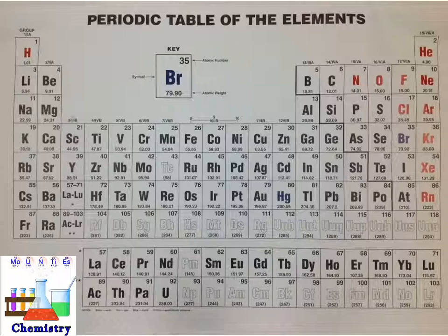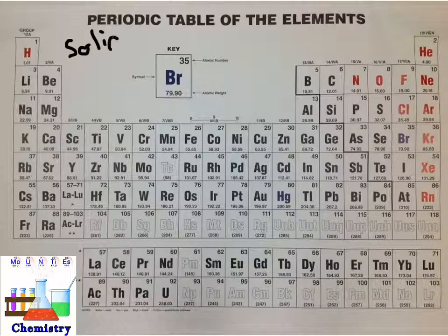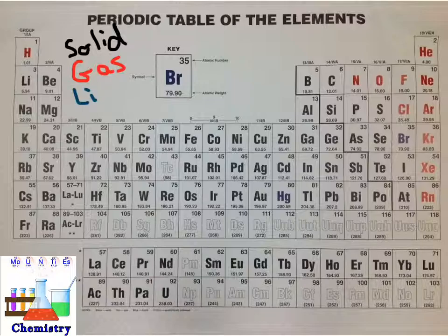Some periodic tables are also color-coded to indicate the state of matter that the element is normally in under usual room temperature conditions. On this particular periodic table, element symbols that are in solid black indicate elements that are in a solid state under normal room temperature conditions. The elements listed in red are gaseous elements under normal conditions. The ones in blue represent elements that are normally liquids at room temperature.